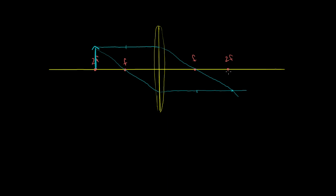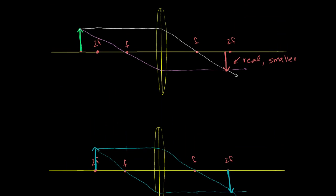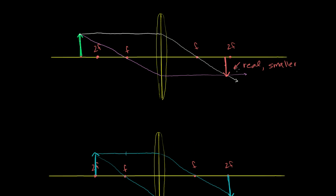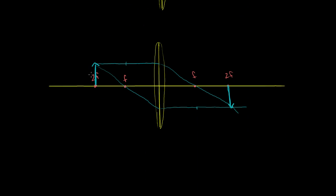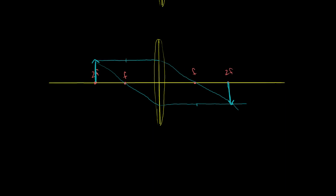This will be an inverted image that's exactly the same size at the exact same distance. The image is the same size as the original object but it's inverted, and it's at the same distance from the lens just on the other side. Once again, this is a real image.